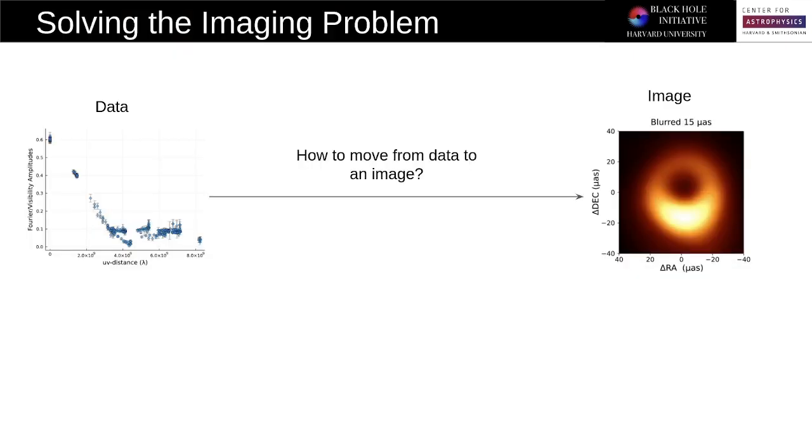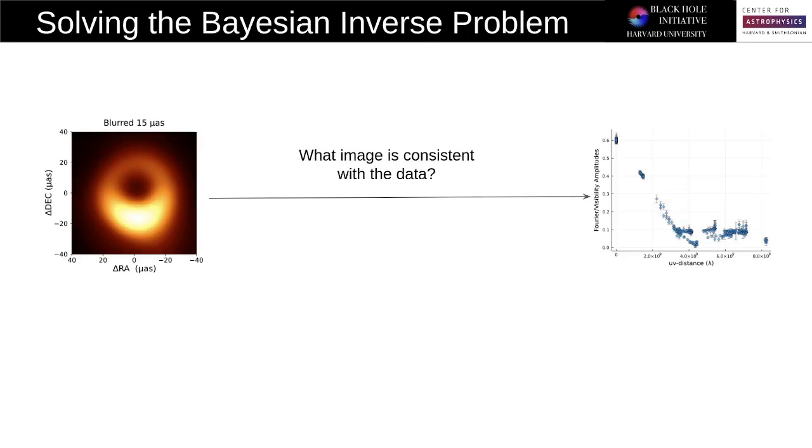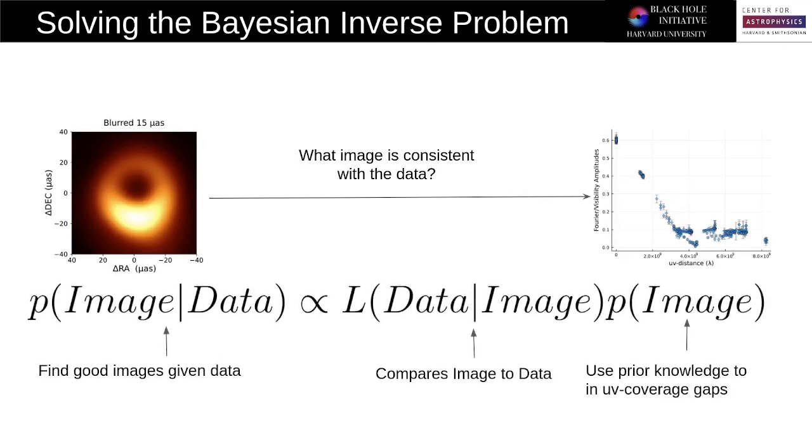So how do we solve the image problem, or how do we move from data to an image? Well, actually, it turns out that the easier approach is to look at the inverse question, namely, what image is consistent with the data? And a natural framework to do this with is Bayesian inference, namely where we try to characterize the distribution of potential images given a data term or the likelihood and a prior that encodes our prior knowledge of what should happen in these large coverage gaps that we have.